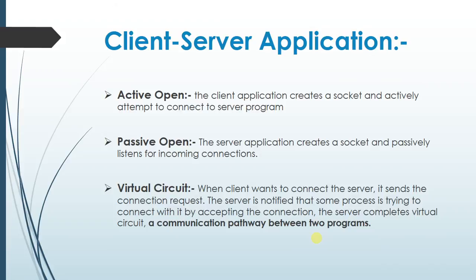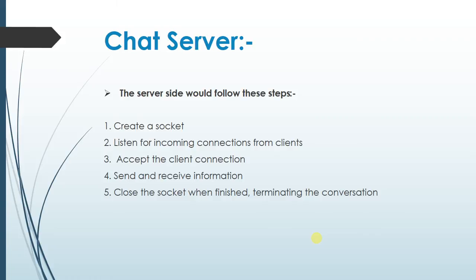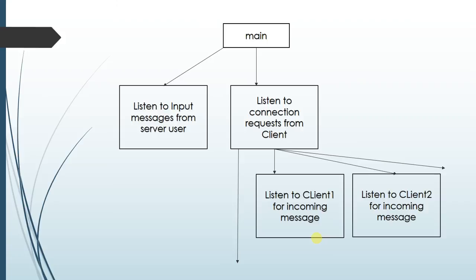Now the chat server. The chat server follows these steps: first, it creates a socket; then it starts listening for incoming connections from clients; then it accepts the client connection, sends and receives information; and finally the socket is closed when the conversation is finished. Here you can see the flowchart of how the chat server works. In the main method, it is always listening to input messages from the server user and also listens to connection requests from clients — here shown for client one and client two.